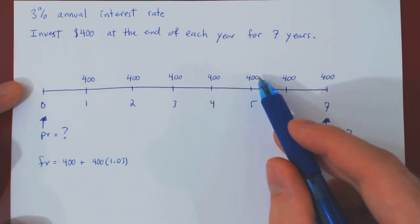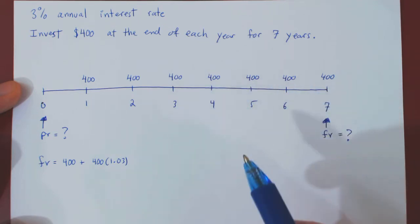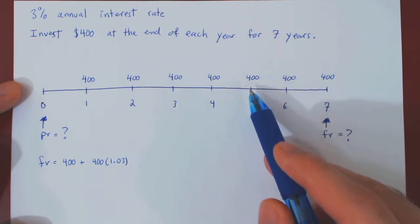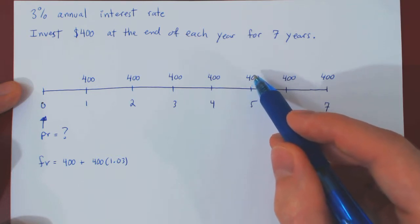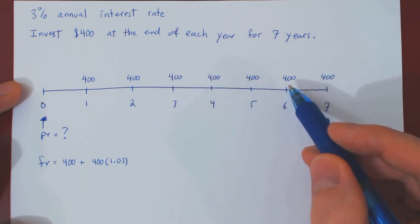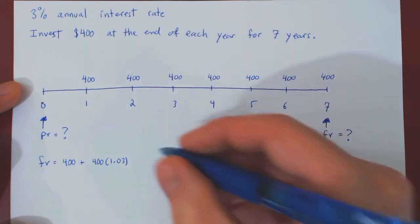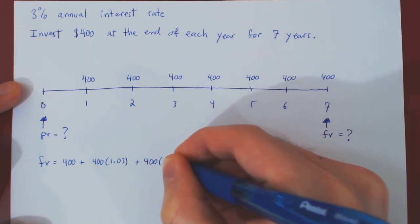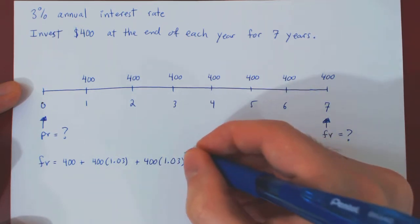Plus the value of this investment, but now not once, but two units of time forward in time. Let's do it one step at a time. If you bring this investment forward by one unit of time, it is multiplied by 1.03. But again by one unit of time, it is multiplied again by 1.03. So we have 400 times 1.03 times 1.03, therefore, times 1.03 squared.